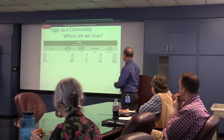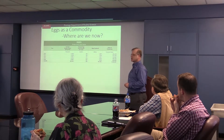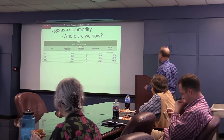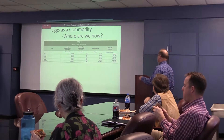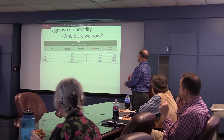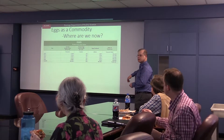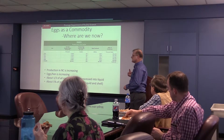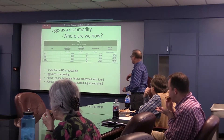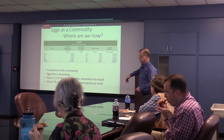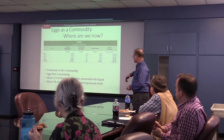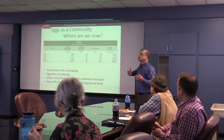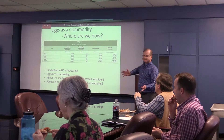Eggs as a commodity — where are we now? Some of you are already very familiar with this table: average number of layers during the year, eggs laid annually per year, eggs produced, and the value of production. What you'll notice is the eggs produced keeps increasing in North Carolina. Production is increasing — the number of eggs per hen is increasing, really from the genetics. What you may not know is about one-third of all eggs are further processed into liquid. About only five percent of production is actually exported, so we consume what we're producing.